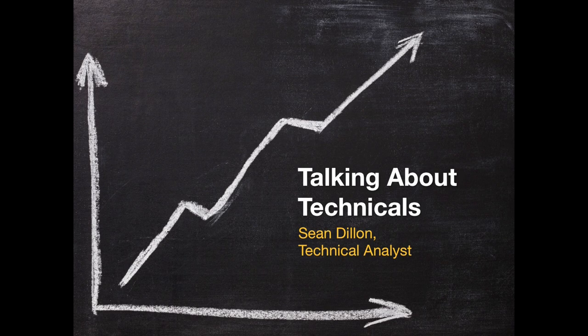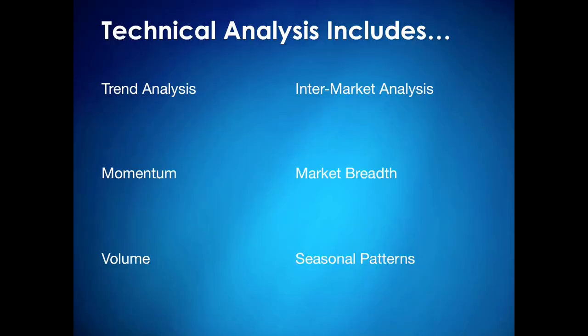I'm going to give you the current technical outlook for the S&P 500. In forming a technical outlook I go over hundreds of different charts, hundreds of different indicators and take an evidence-based approach. Today I'm going to go through a few of them with you, including looking at price which is trend analysis. I'm going to go through some inter-market studies which is looking at historical patterns and seeing if they give us a roadmap for the future.